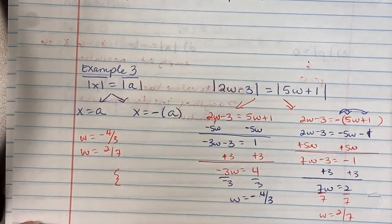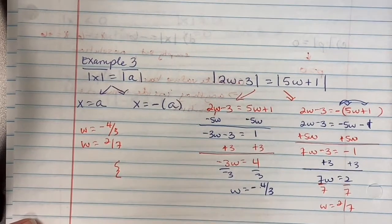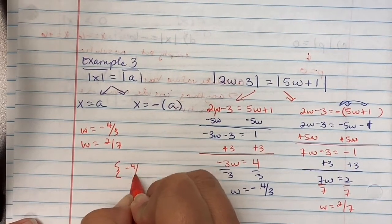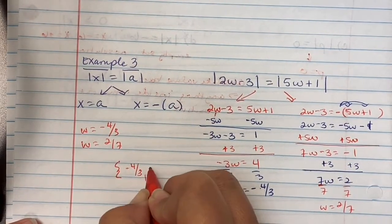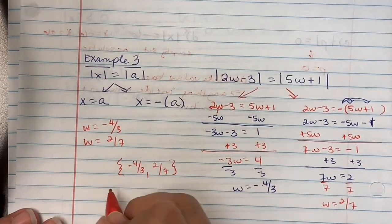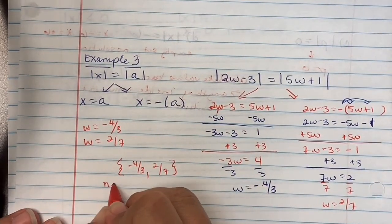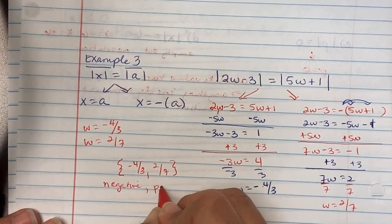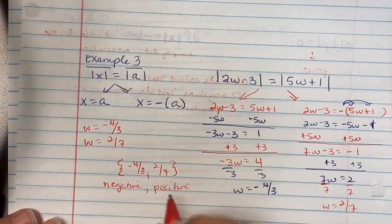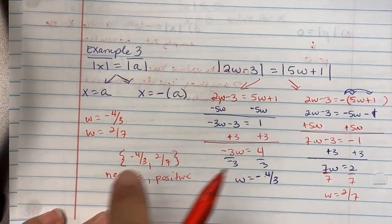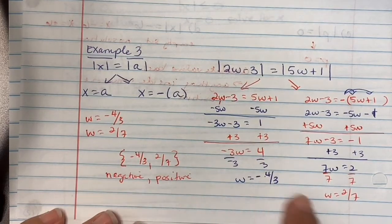So we have two solutions. We would write this in set builder notation with negative 4 thirds first, then 2 sevenths, because negative numbers come before positive numbers — think of order on a number line, left to right, negatives first then positives.